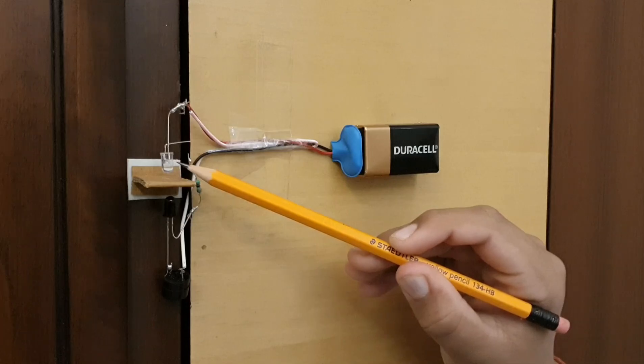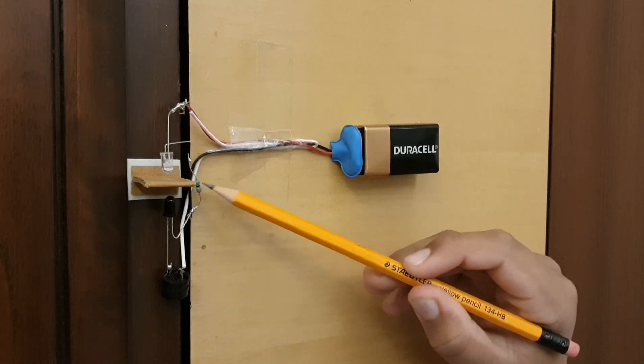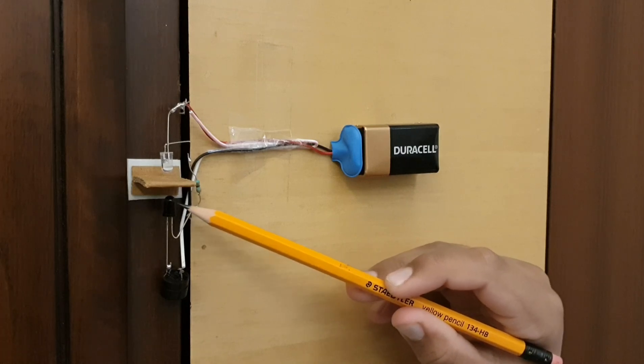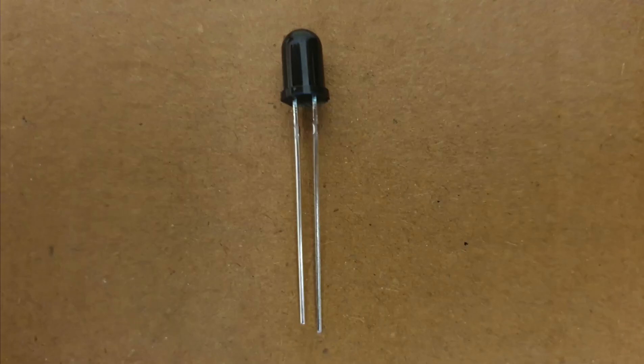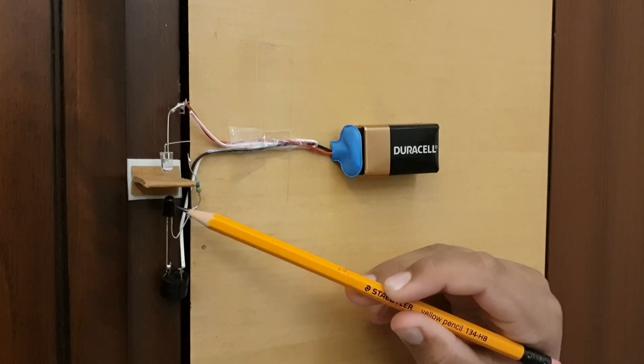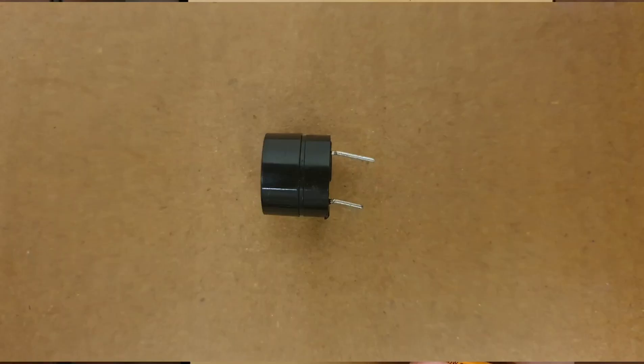This green thing here is called a resistance. This black LED here is called a photo diode or an infrared receiver. And this is a buzzer.